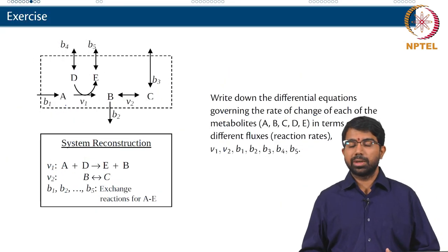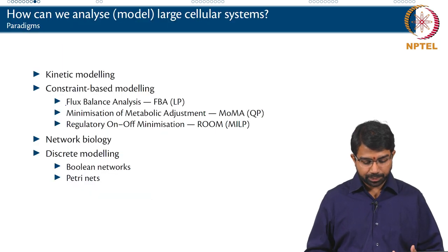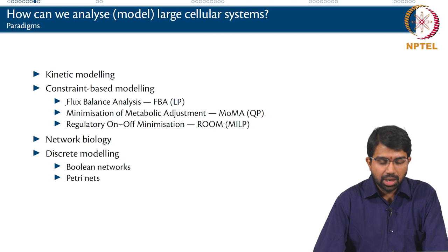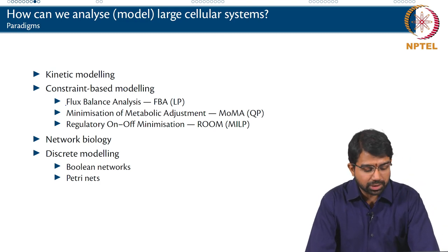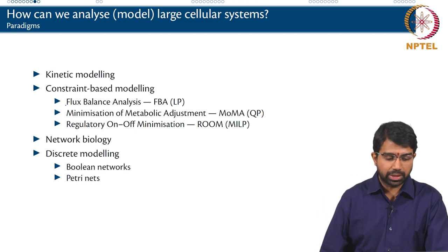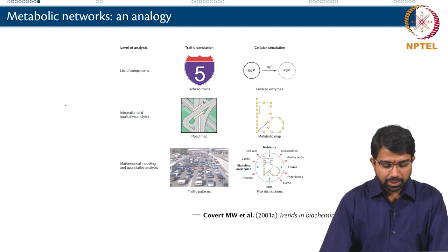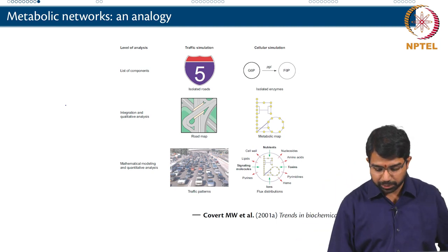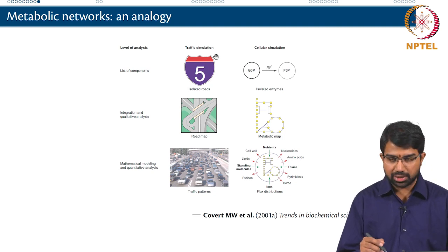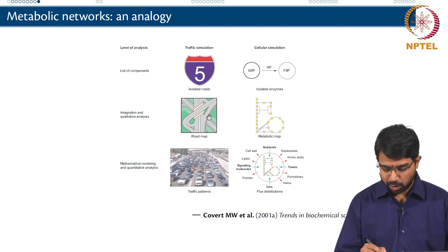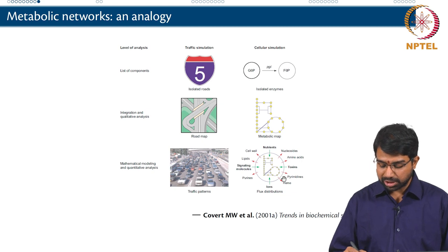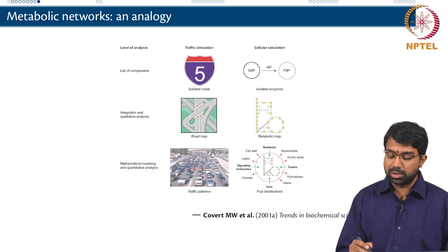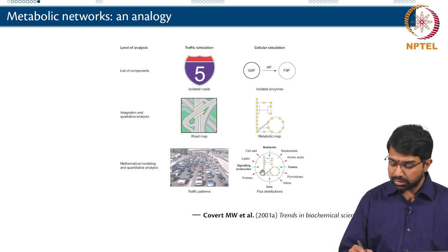Once you have the stoichiometric matrix you can do a lot of things. But let us step back and look at strategies to model large cellular systems. To give an analogy: isolated reactions are like roads in a traffic network, and a metabolic map is similar to a road map. The most interesting part comes when you look at flux distributions — how much traffic is carried on each road, which roads are important, which are blocked — and you can make similar analyses for metabolic networks.